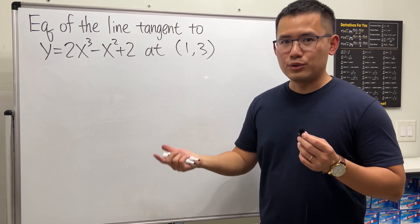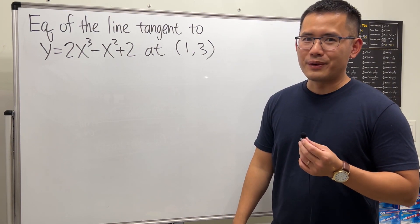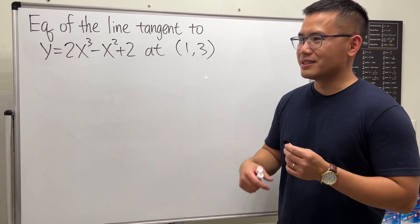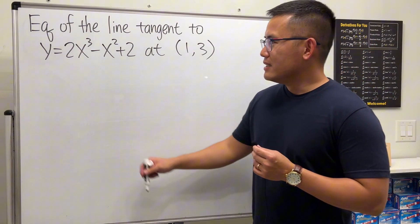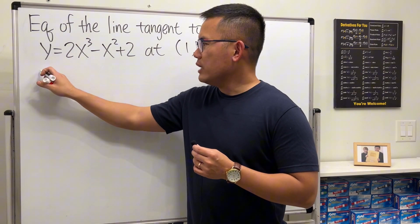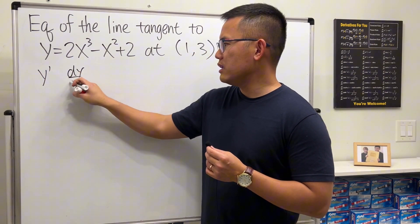The slope of a tangent line is just the derivative, and we can use the power rule because the question does not ask us to use the definition. For the derivative, you can write y prime or dy/dx—same thing, doesn't matter. Let me write down dy/dx for the derivative.